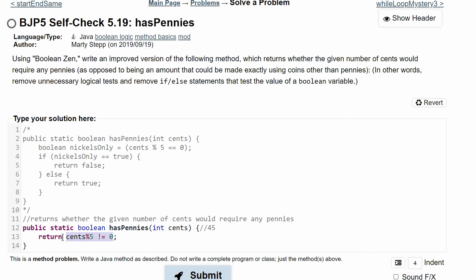So it's going to return false, meaning it returns false for the cents since it would not require any pennies. If we look back at the question, it says return whether the given number of cents would require any pennies. That means if it does require pennies, it will return true.